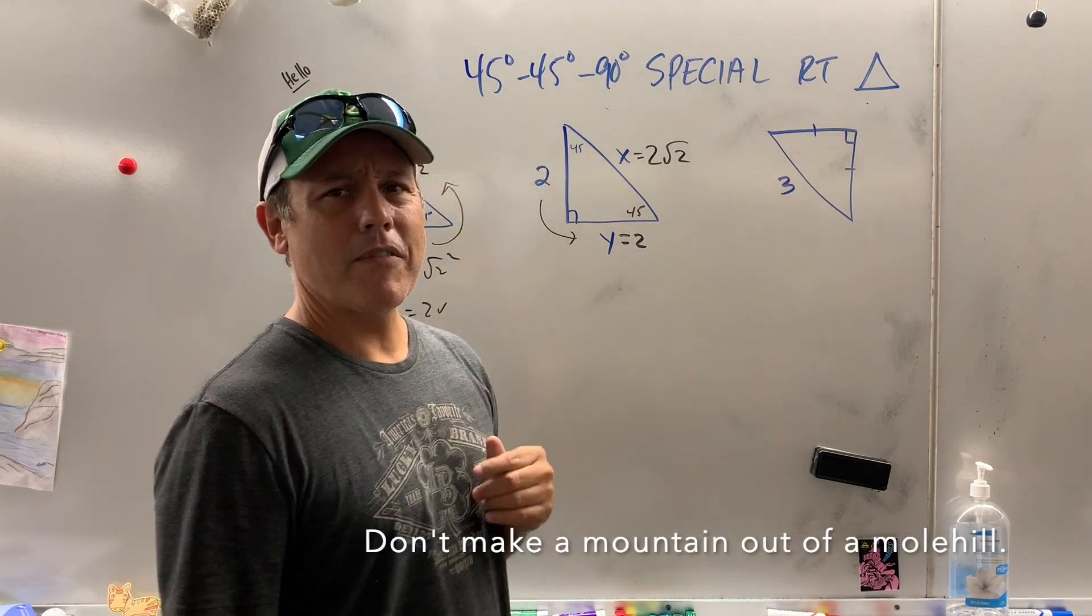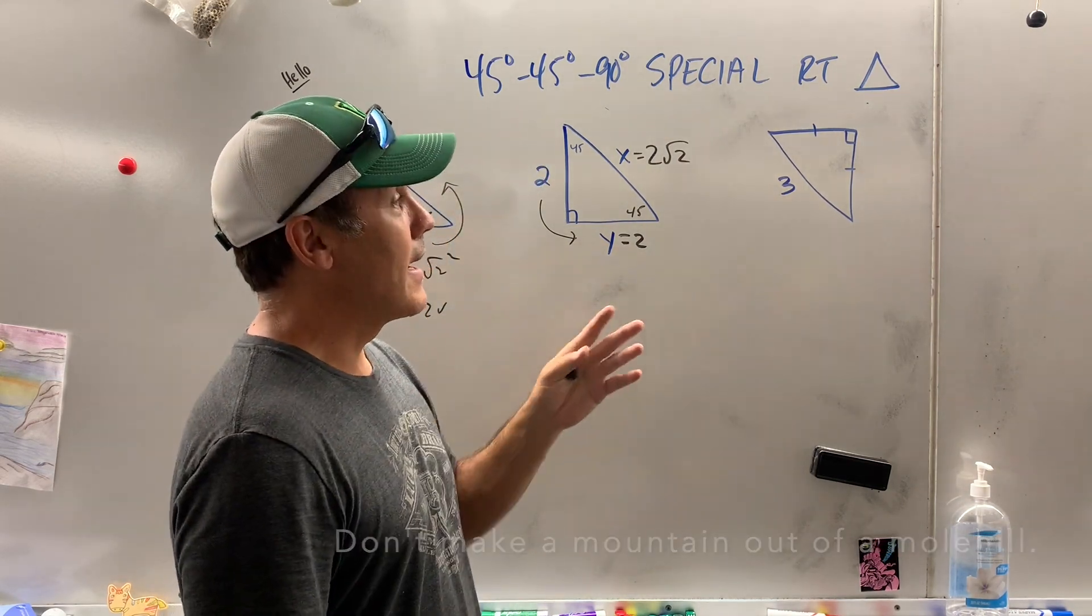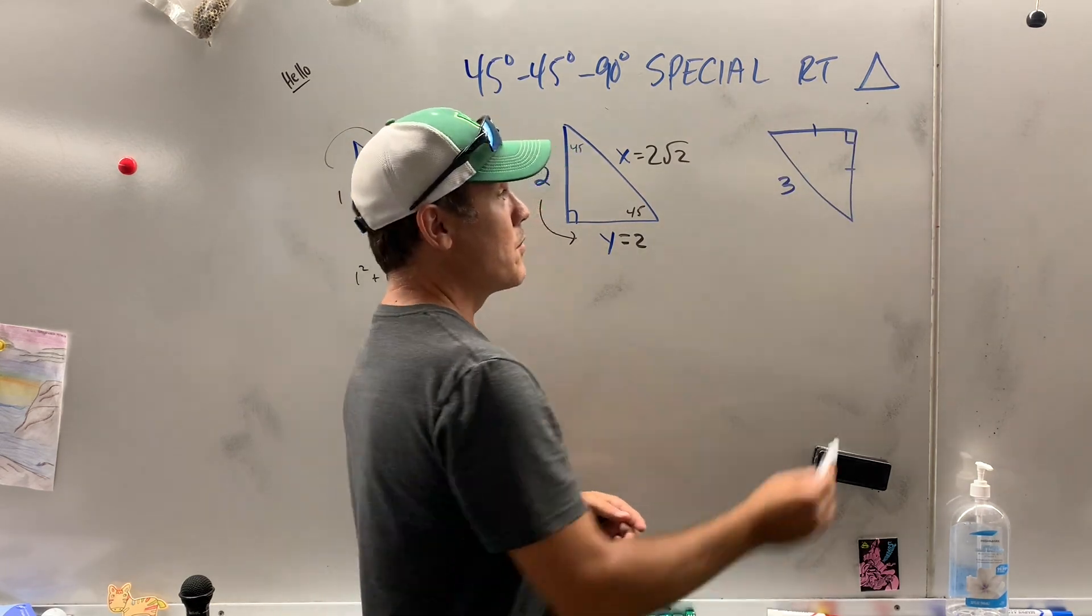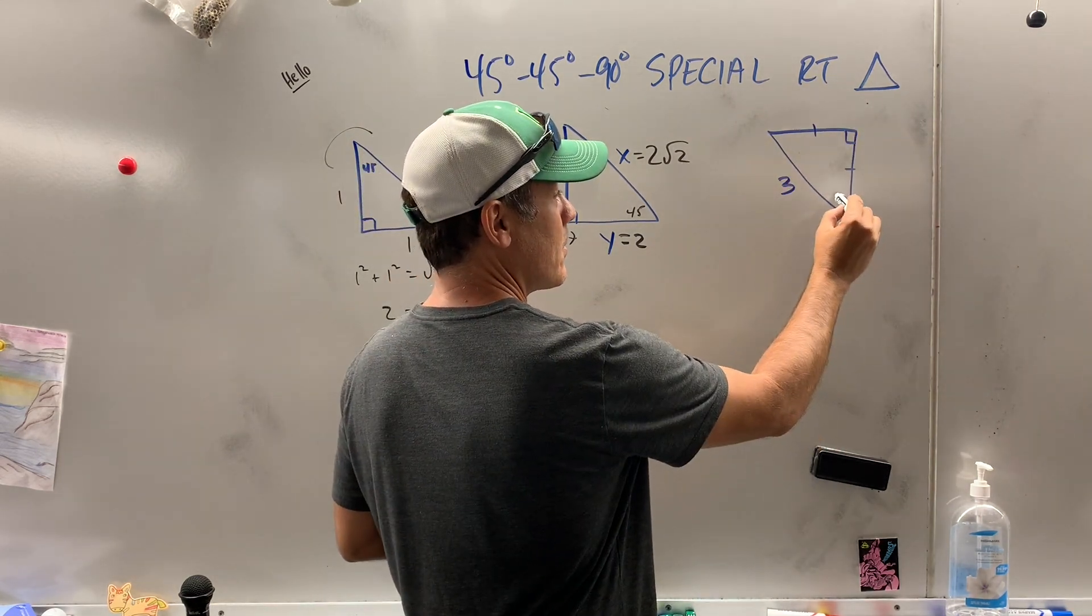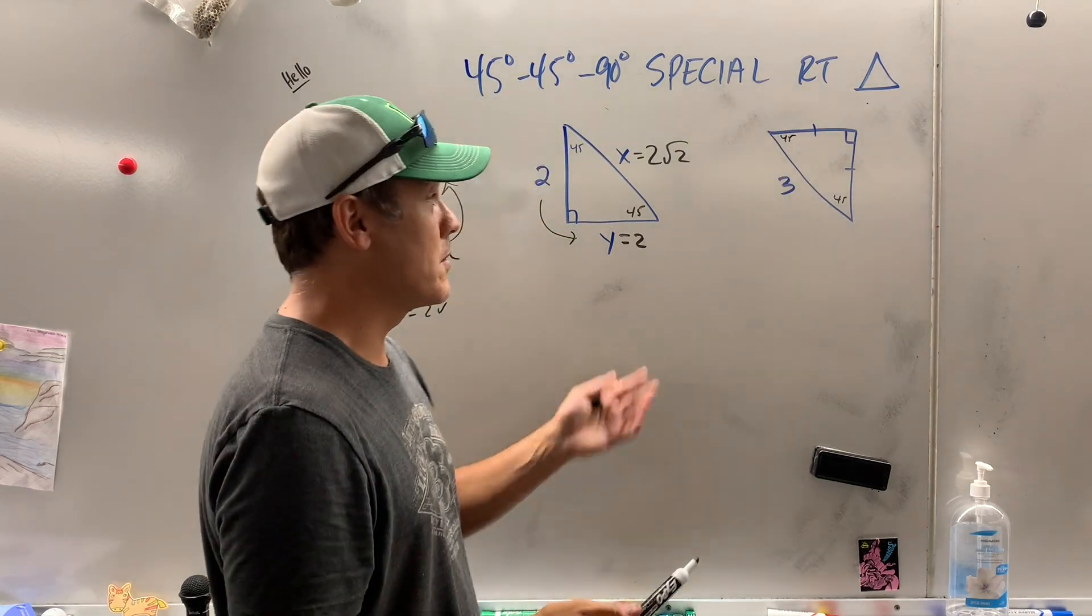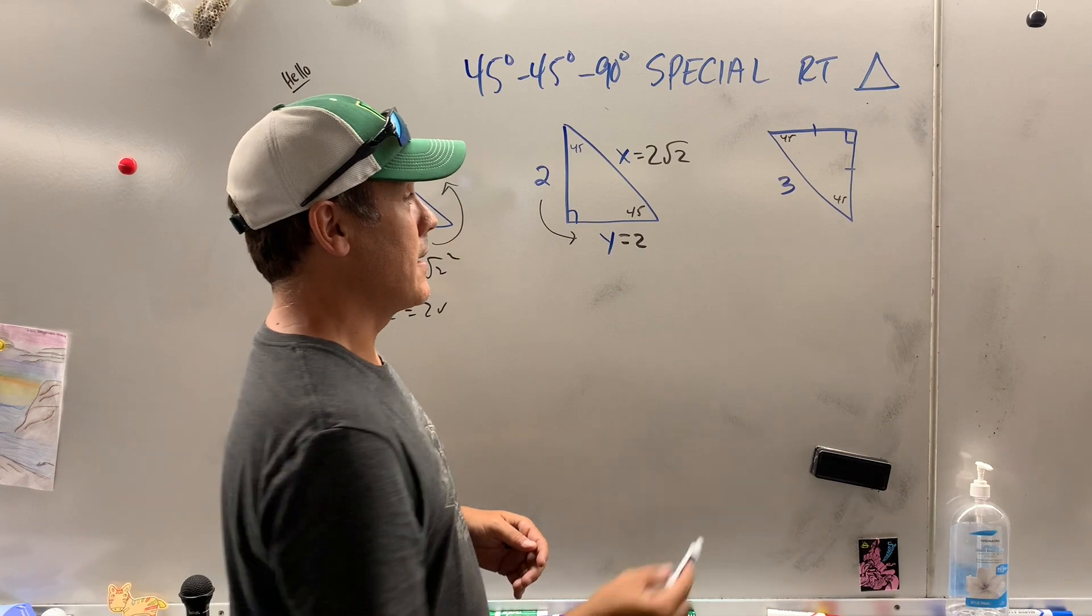Now here, first of all, do I even have a 45-45-90? I do because this is an isosceles right triangle, which if these sides are congruent, the base angles have to be the same. You got to divide it two equates. It's 45-45-90.